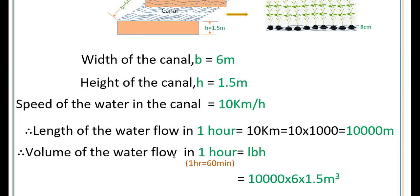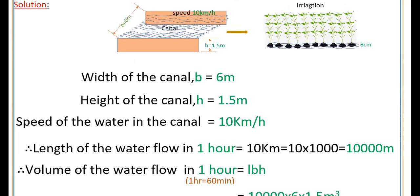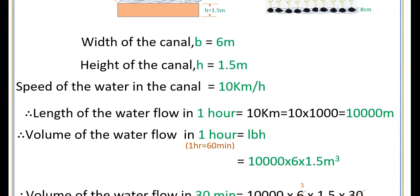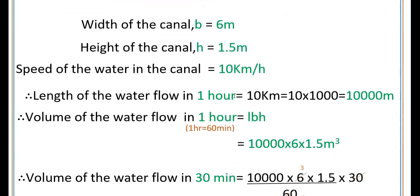Therefore, volume of the water flow in one hour is equal to L × B × H, because this canal is in the shape of a cuboid, so volume is LBH. Here length L is 10,000 meters, B is 6 meters, and H is 1.5 meters.